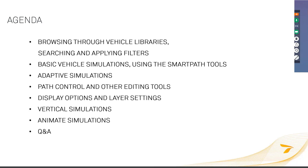Jumping ahead into the quick agenda overview, most of the time — about 90% — I would like to spend within the software demonstration. We will be looking into how to browse vehicle libraries, select your vehicles, search or apply certain filters, how to create basic vehicle simulations using the SmartPath tools, or looking into the other method — the adaptive simulation. Then we will look into the path control tool, various editing tools, display options and layer settings, vertical simulations and animations, and at the end we will have time for questions and answers.